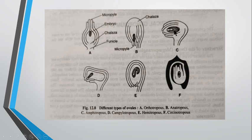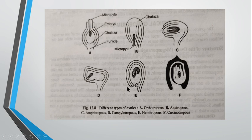The fourth type is known as campylotropous. Here the ovule is curved and the micropyle is directed towards the chalaza, with the chalaza situated at a right angle to the funicle. You can see some examples in the next slide.